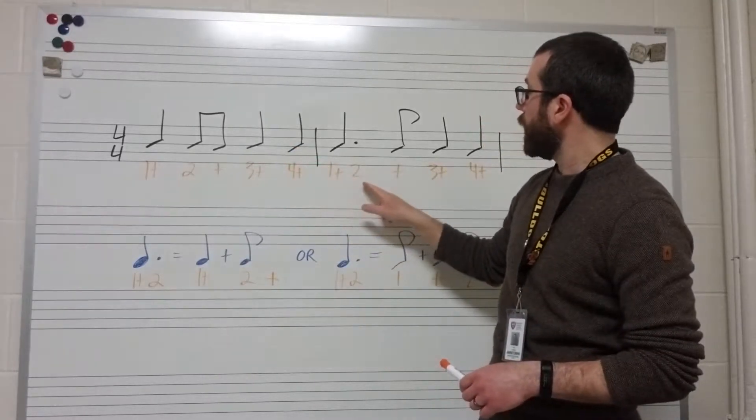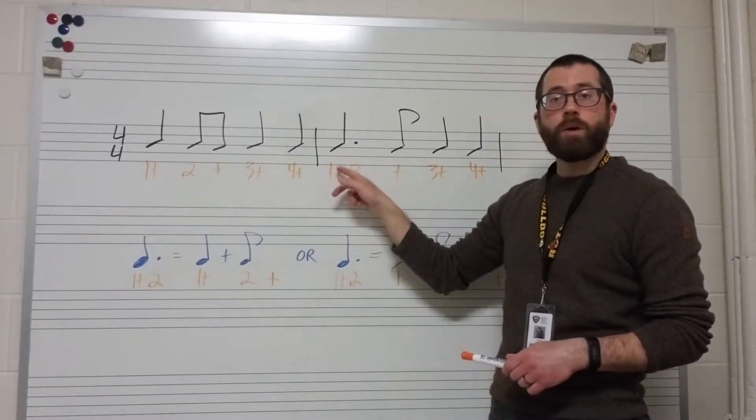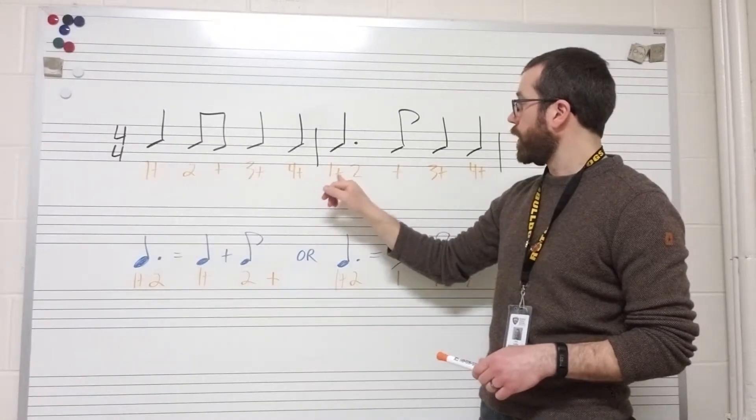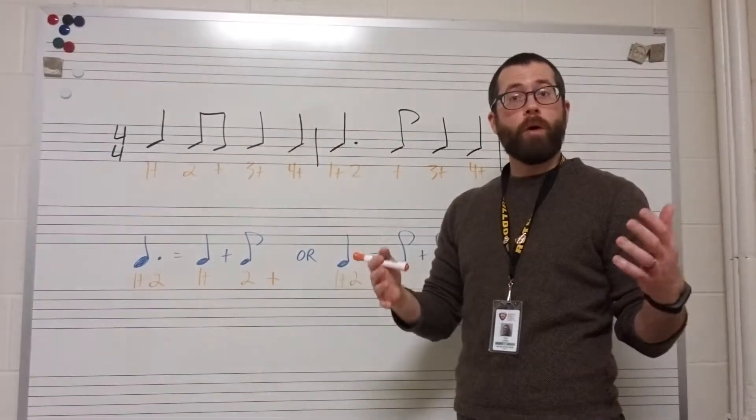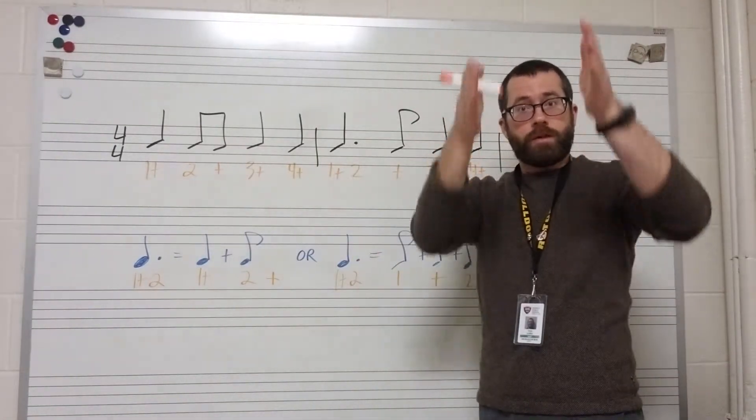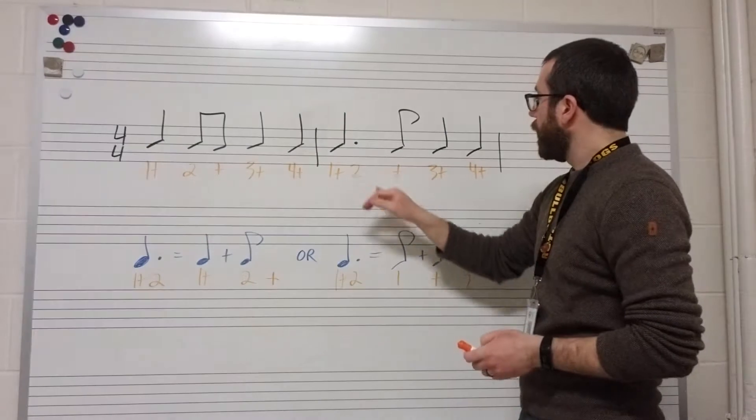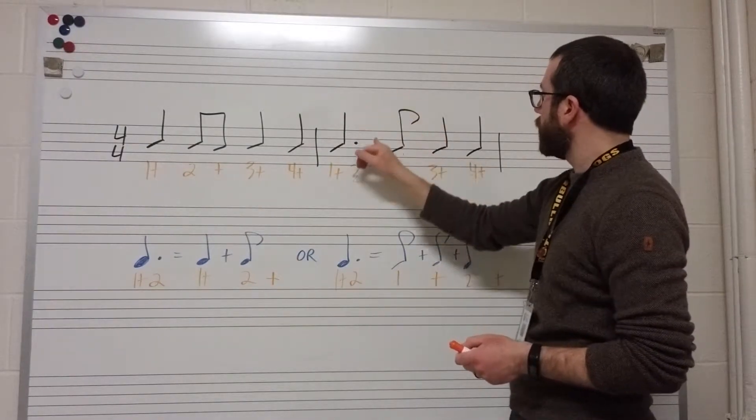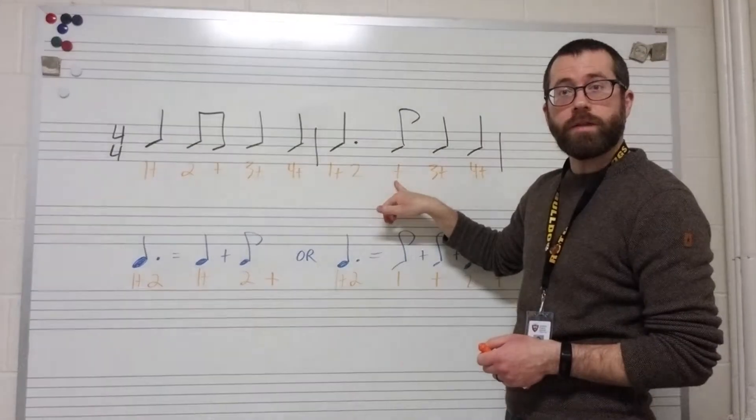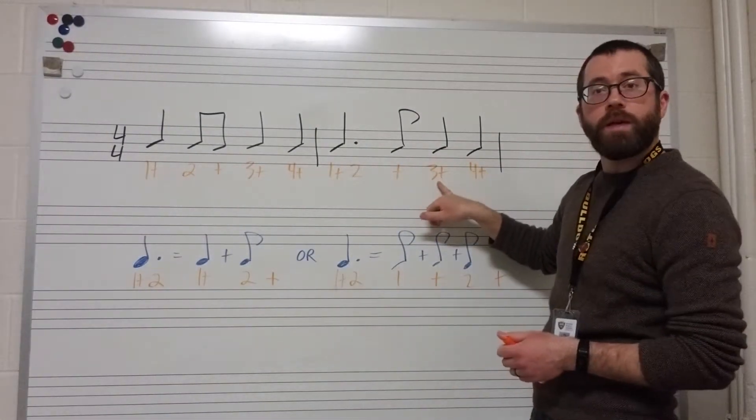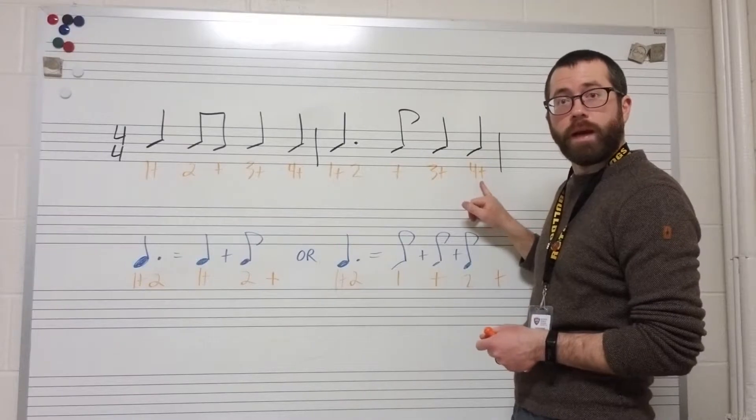And here we are at the dotted quarter note. And so we're going to count this one, again, as one and two. And I usually write the two underneath the dot. That just helps me know that there's that beat right there. And then here we are. There's that remaining eighth note. And so we add just an and underneath it. Then we continue on, three and, four and.